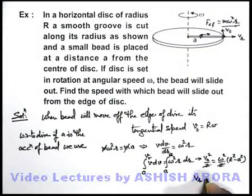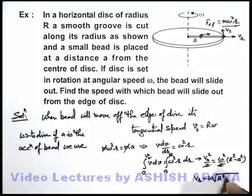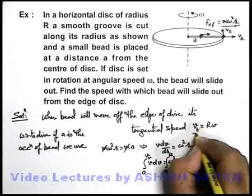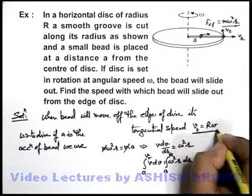The radial speed with which the bead will be coming out is omega root of r square minus a square. This is the speed with which the bead is coming out in radial direction, and in tangential direction it is having this speed.